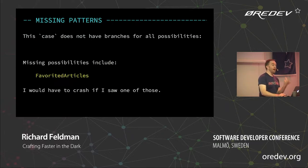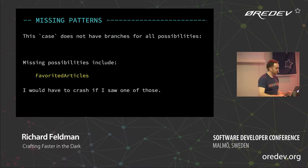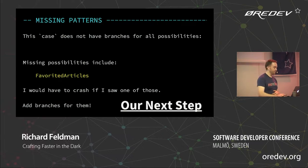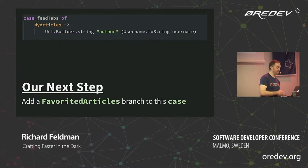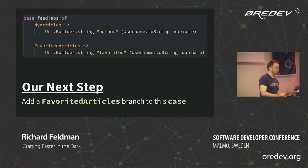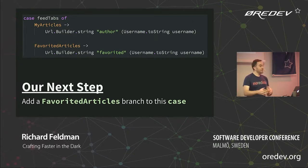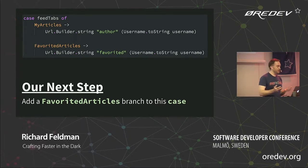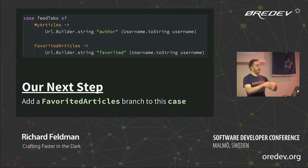It also tells me: the missing possibilities include favorited articles. And it explains: I would have to crash if I saw one of those because I don't know how to handle it. And as we'll see, Elm is really big on not crashing. So just add some branches for them. I know this is the one that goes to the endpoint — it's not just mechanical, I do still have knowledge of the system. On the plane flight I knew what to do: specify the HTTP request this feed will use. In the first case go get the author endpoint; here, go get the favorited endpoint instead.